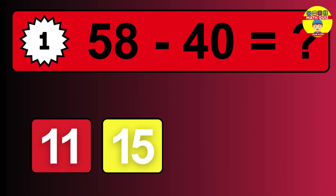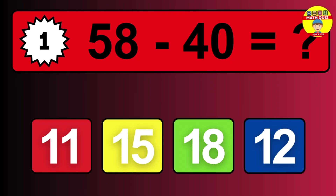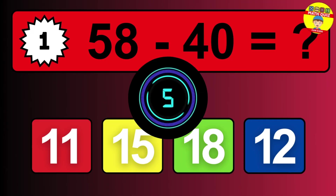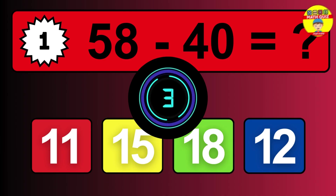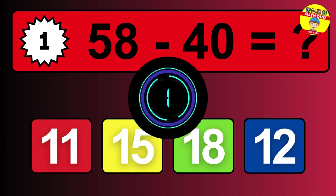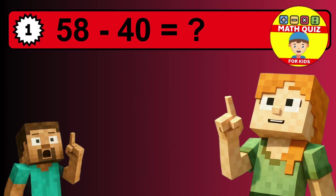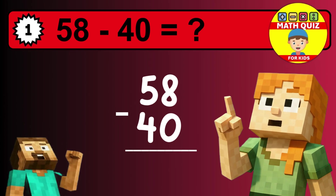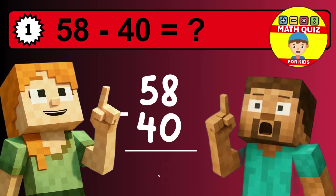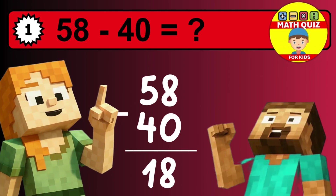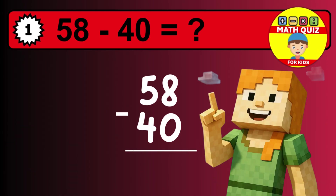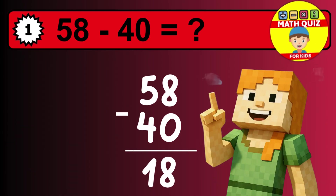What is 58 minus 40? Time to think. Let's solve this step by step. We start with the units: 8 minus 0 is 8. Then we go to the tens: 5 minus 4 is 1. The final answer is 18.